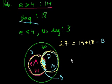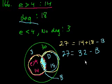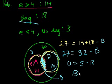If we want to know the total number of people in this circle and this circle combined, we add 18 to 14, but we're counting the intersection twice. So we want to subtract these people out once. We get 27 equals 14 plus 18, which equals 32 minus b. Subtract 27 from both sides: 0 equals 5 minus b. Add b to both sides: b equals 5. And that is choice E.